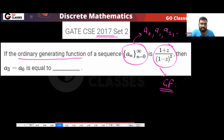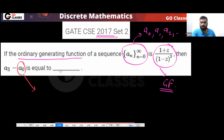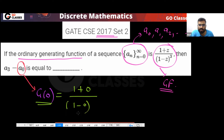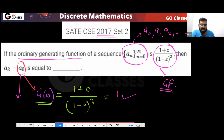We have to find a₃ minus a₀. For a₀, you don't have to put in any effort — a₀ will simply be g(0). Just put z equal to zero. You will get this to the power three, and finally you get one. So a₀ is one.